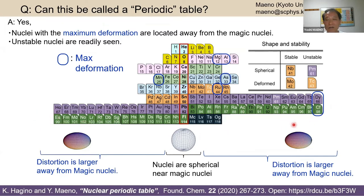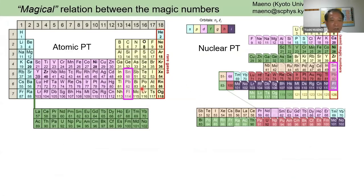More unstable nuclei farther from magic numbers are used to create super-heavy elements like nihonium. We then found a magical relation between the two periodic tables: the familiar atomic periodic table and the new nuclear periodic table based on proton magic numbers. In the atomic table, group 14 contains tin, lead, and flerovium — and these happen to be proton magic number nuclei.